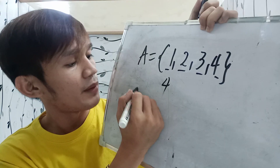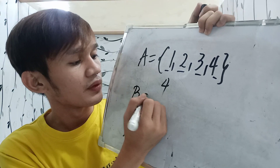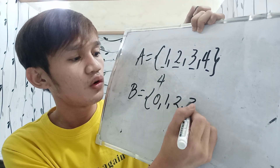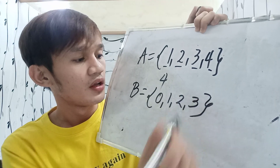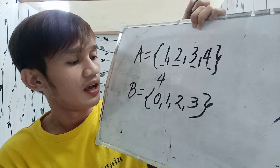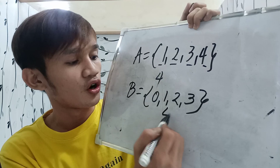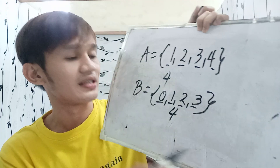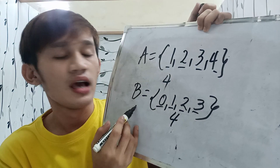How about SET B? If we have 0, 1, 2, 3 — what is the cardinality of SET B? It is also 4, because we have 4 elements in SET B.